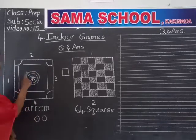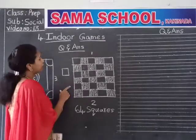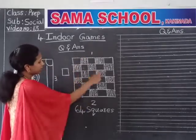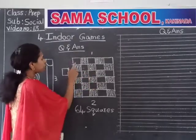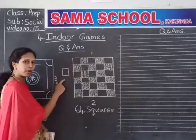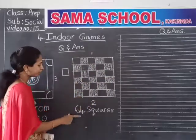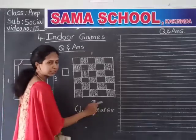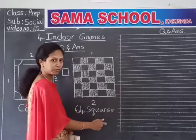This is the chess board. What is this? Chess board. Two members will play. In this one, so many boxes are there — black box, white box. This box is in which shape? Square shape. Total how many squares are there in this chess game? 64. Square shape. Now, do you understand?